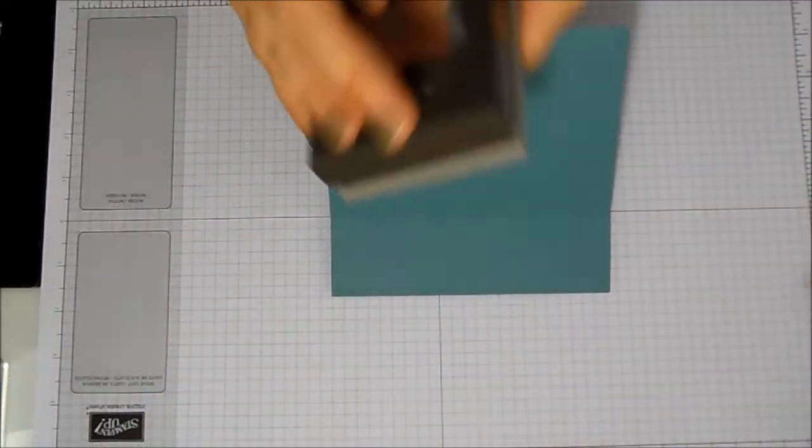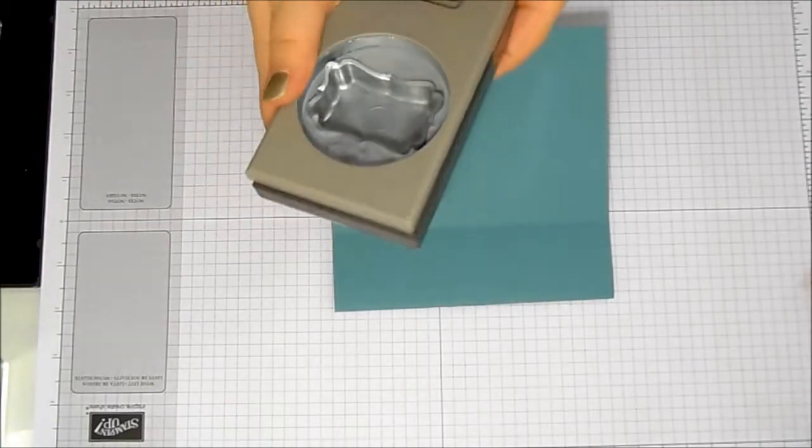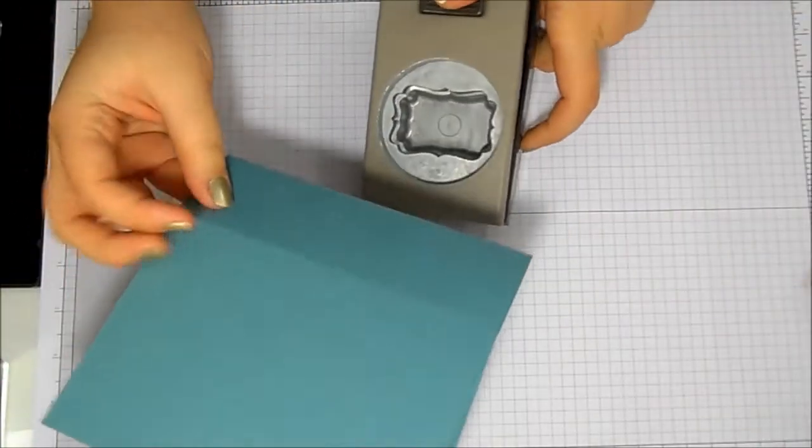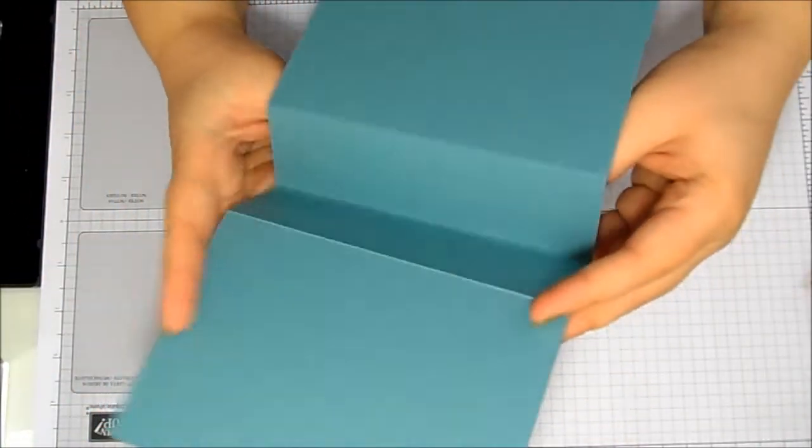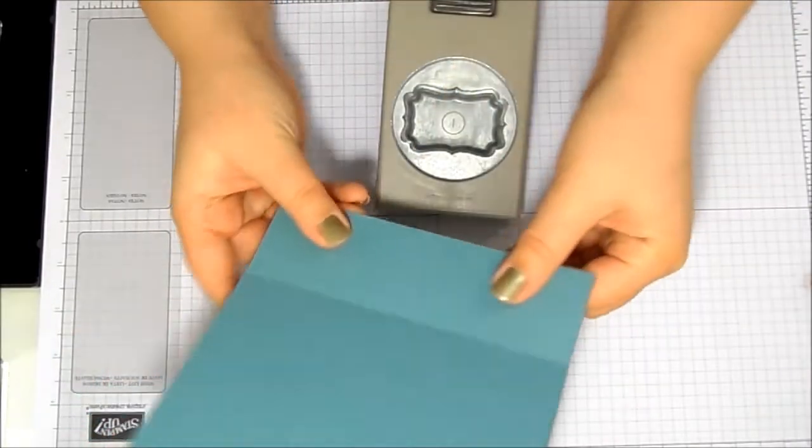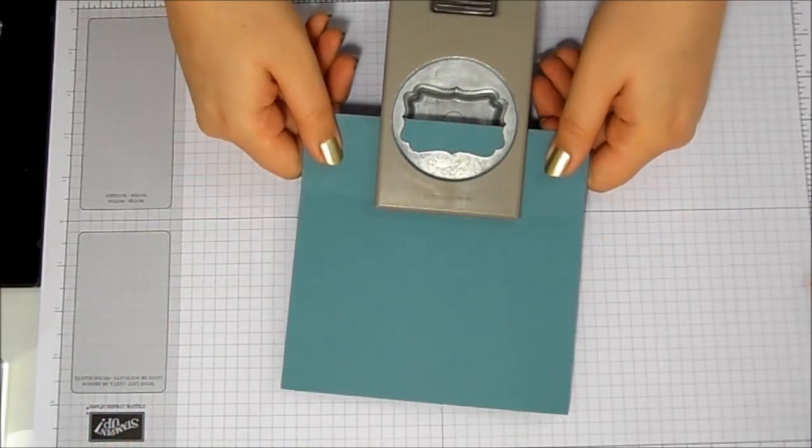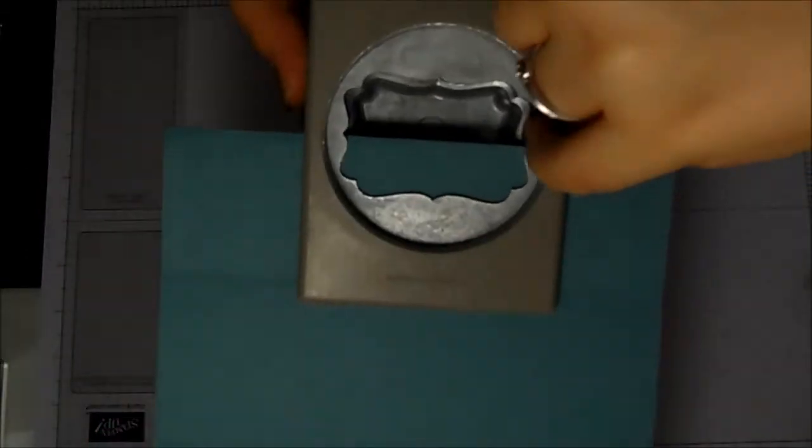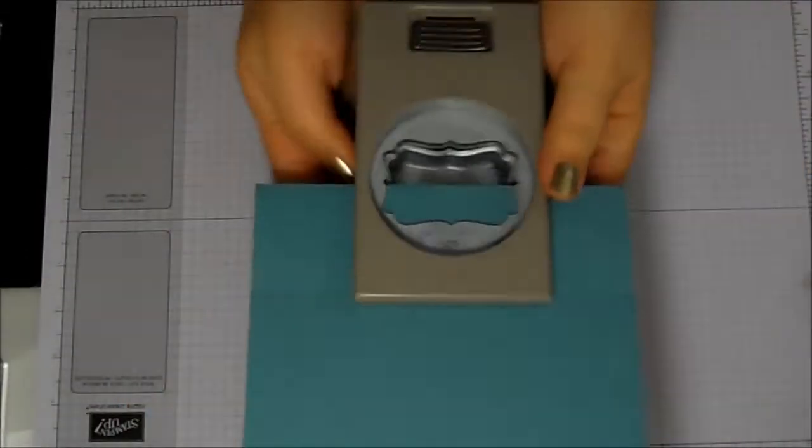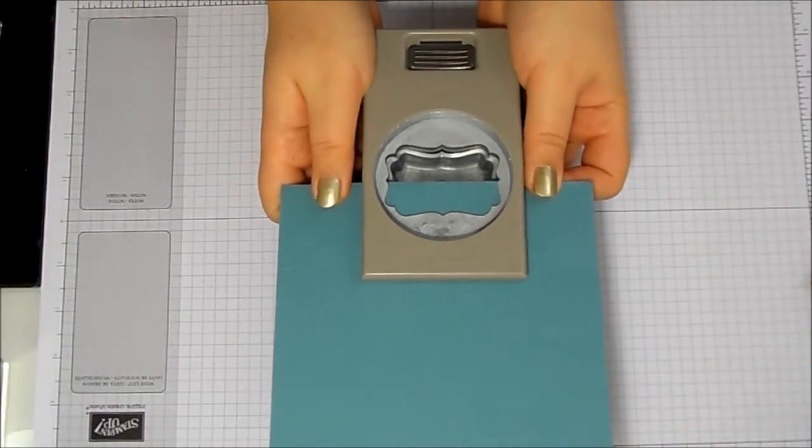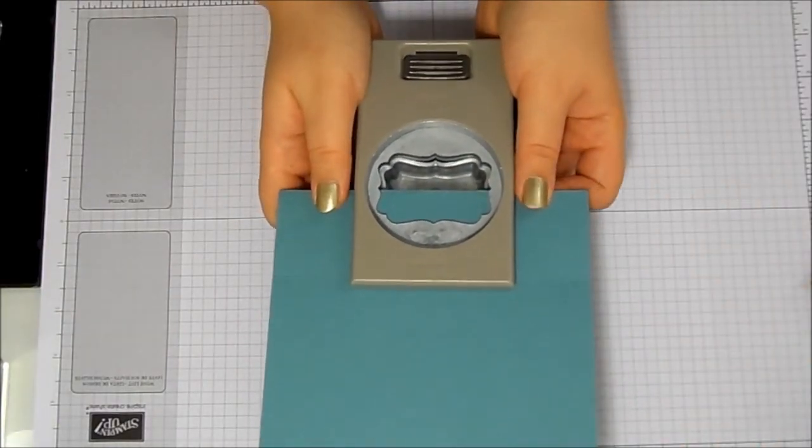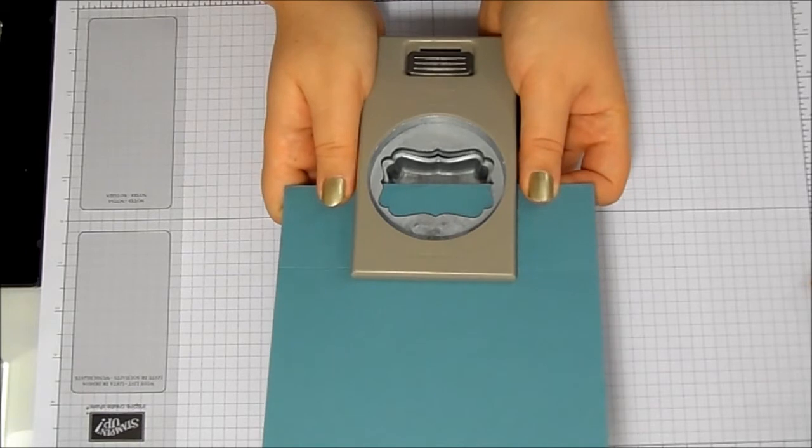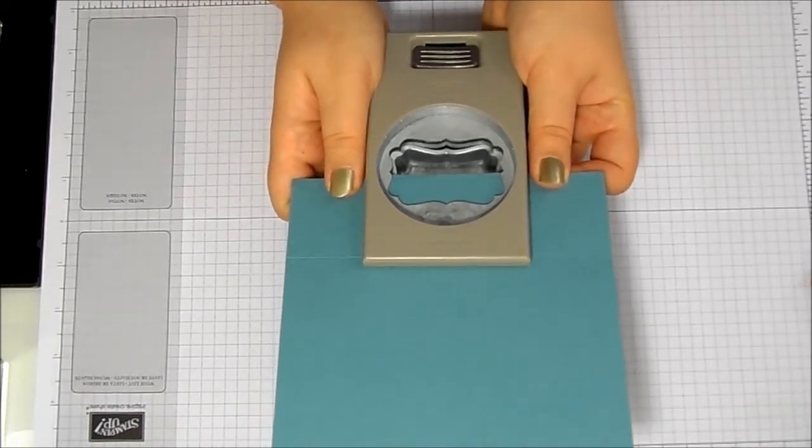And we're going to do that with the decorative labels punch. So if you open your punch, we're going to slide our cardstock in so it's folded in half along that middle score line and we're going to feed it into our punch, but only up to the kind of middle bits or those two little marks.